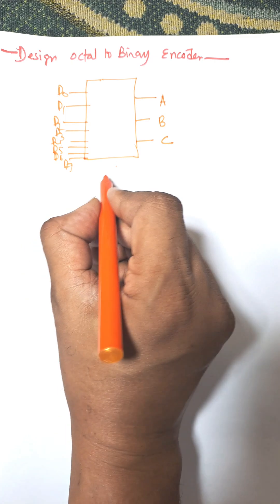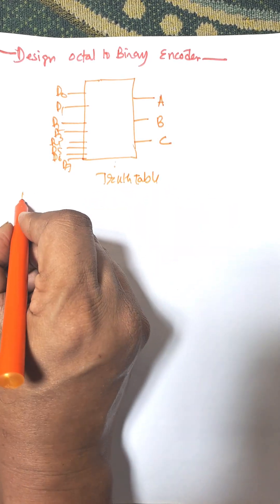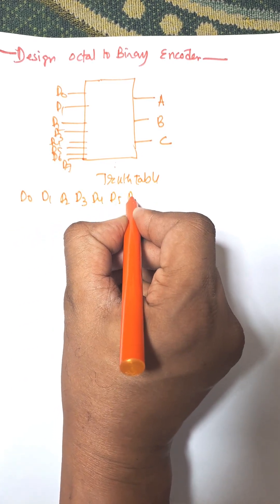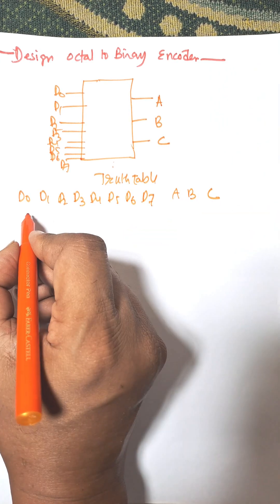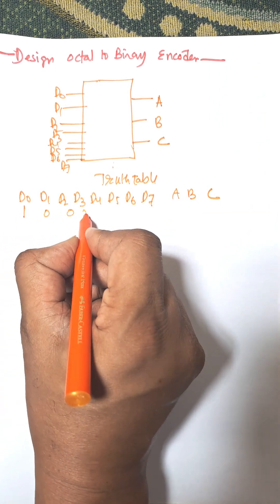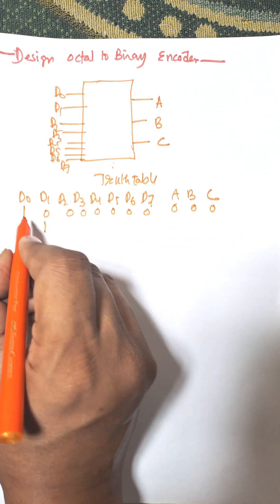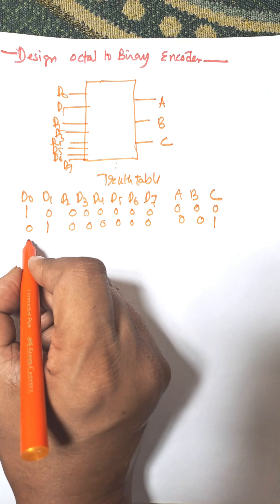Now the truth table. This is the truth table with inputs d0, d1, d2, d3, d4, d5, d6, d7 and outputs a, b, c. When d0 equals 1, remaining all are 0 and output will be 0, 0, 0. And when we press d1, remaining all are 0, the equivalent binary is 0, 0, 1.